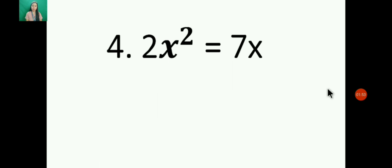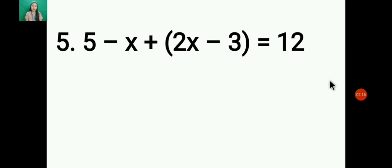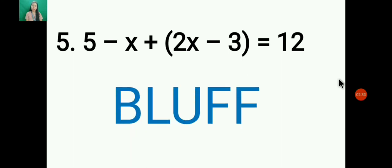Number 4: 2x² = 7x. Is it Fact or Bluff? The correct answer is Fact, because the highest degree of this equation is 2. Last but not least: 5 - x + (2x - 3) = 12. Is it Fact or Bluff? The correct answer is Bluff, because the highest degree of exponent in this equation is 1.